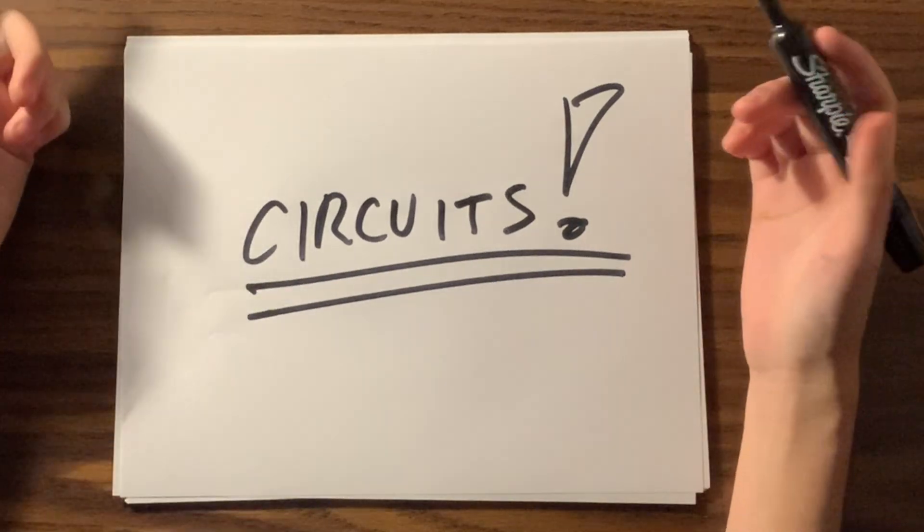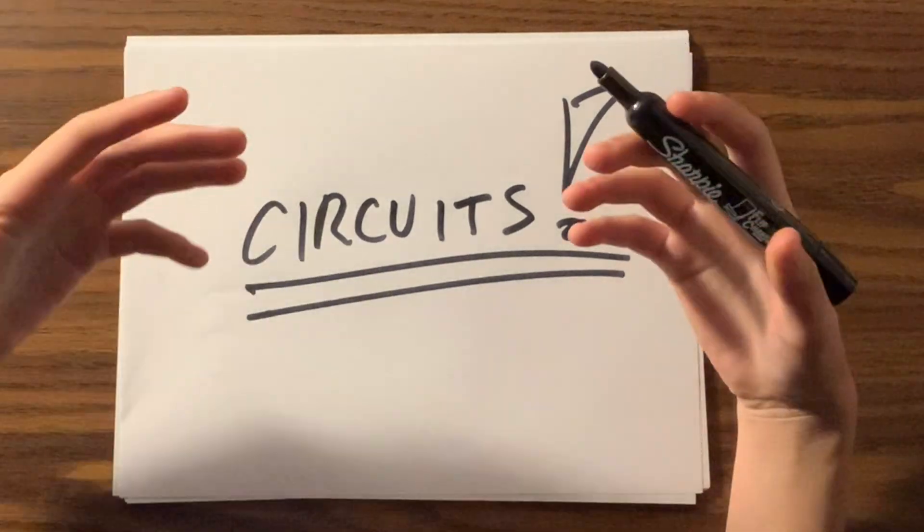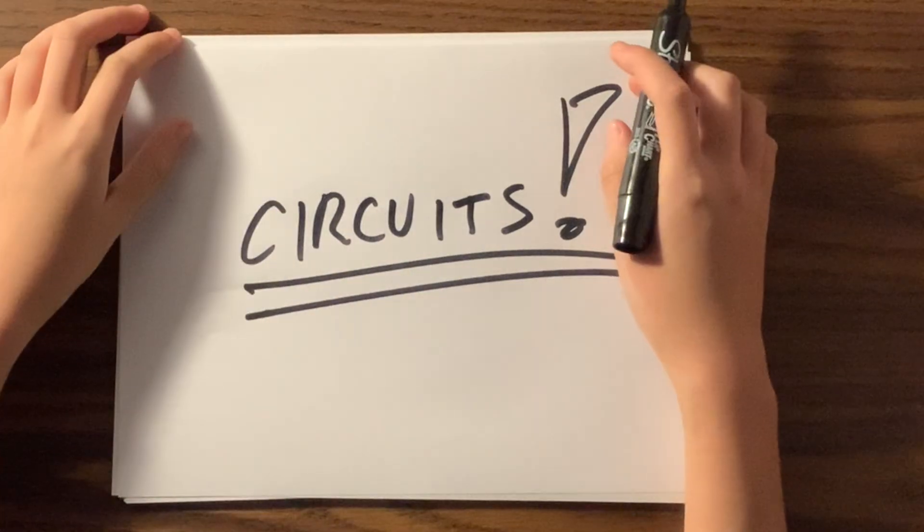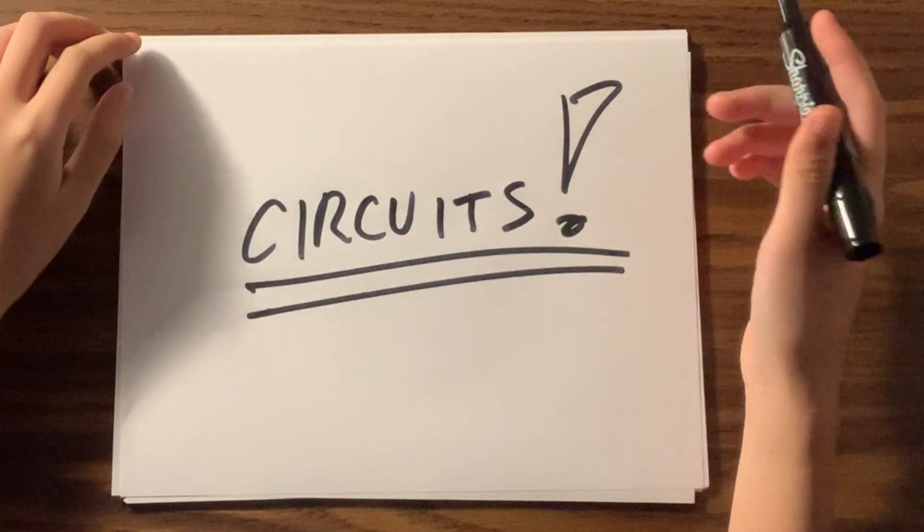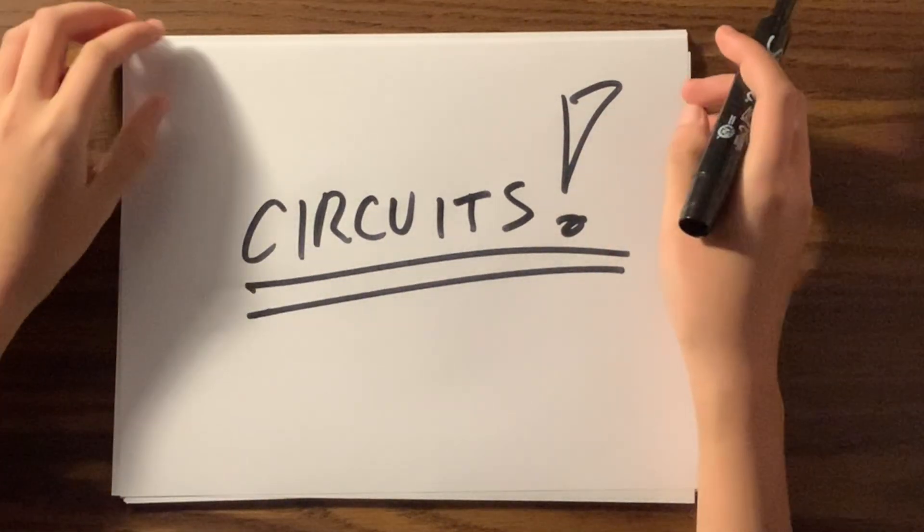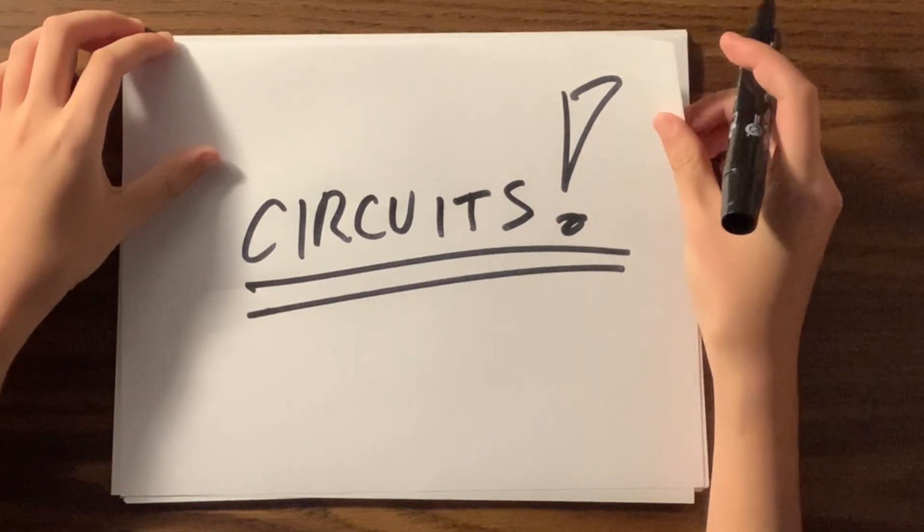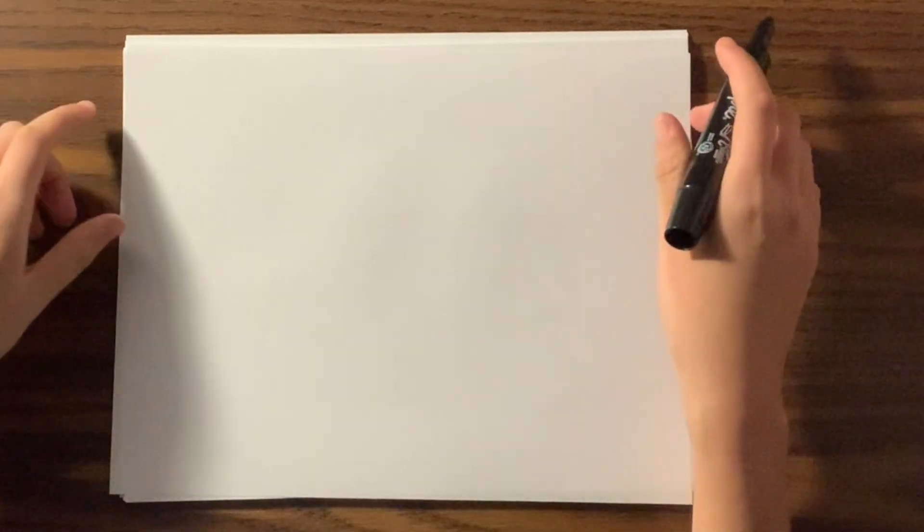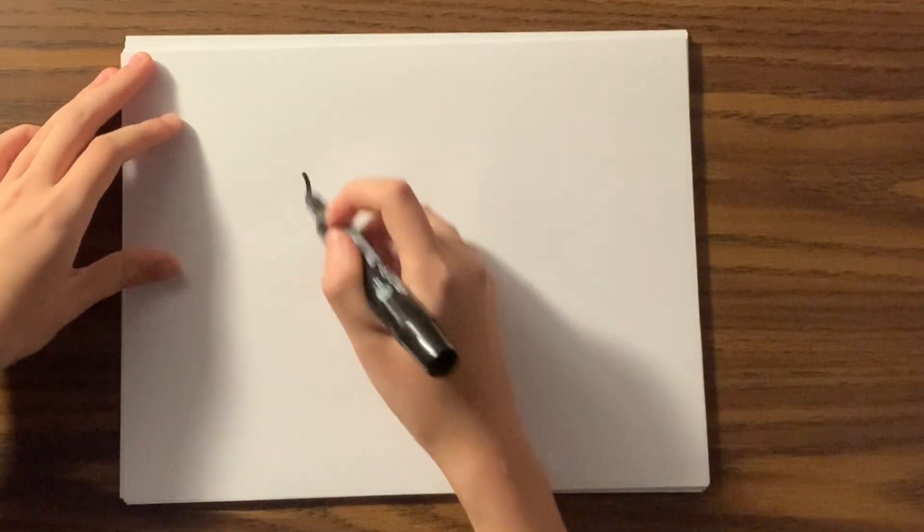Today we're talking about circuits in ISYE 3770. Circuits are a cool application of using the addition rule of a union and the concept of independence. The best way to explain circuits is to work through an example problem.